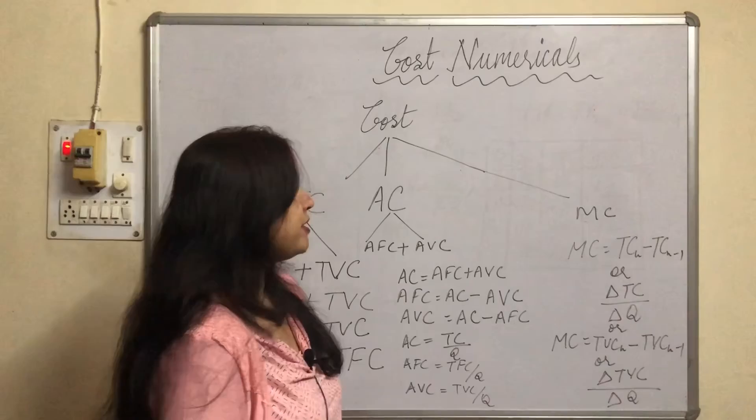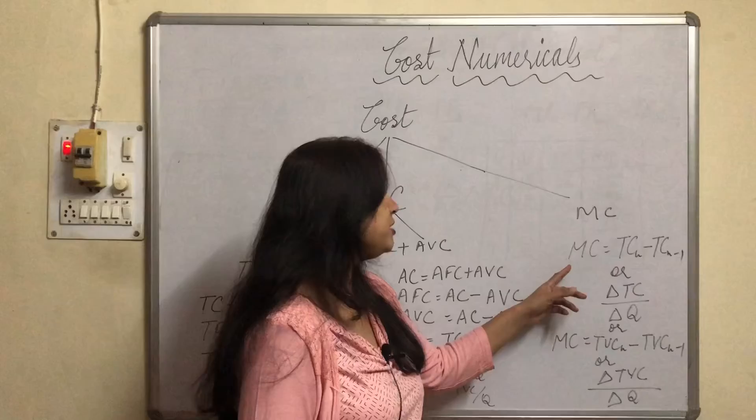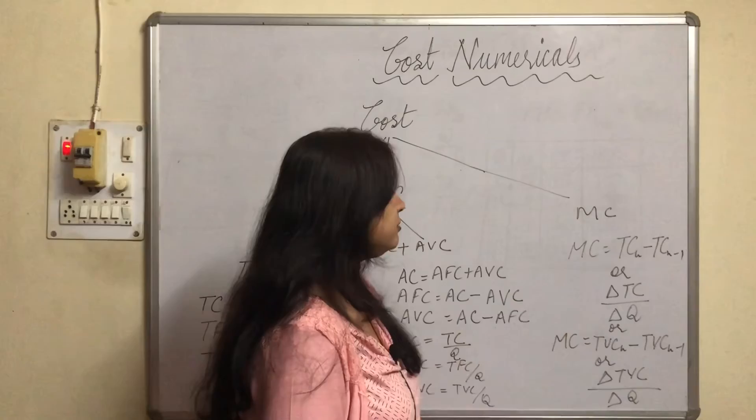Then MC. MC you can find from TC as well as TVC. If we want to find from TC then TC sub n minus TC sub n minus 1. There is one more formula: delta TC upon delta Q.